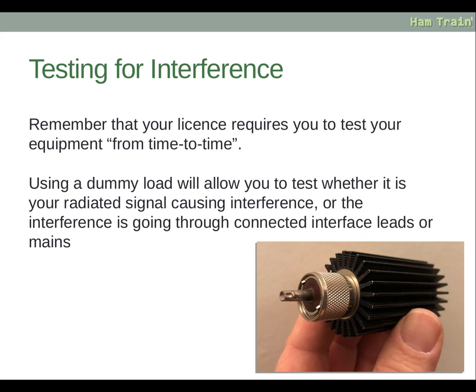For testing for interference, remember that your licence requires you to test your equipment from time to time. Using a dummy load will allow you to test whether it's your radiated signal causing interference, or whether the interference is going through connected interface leads or the mains itself. If you attach a dummy load to your radio instead of an antenna and transmit, and the problem stops, you know it's your signal from the aerial that's the issue. If the problem continues, it shows the interference must be getting in another way — perhaps through the mains leads or an interface lead — helping you to narrow down how the problem is occurring.